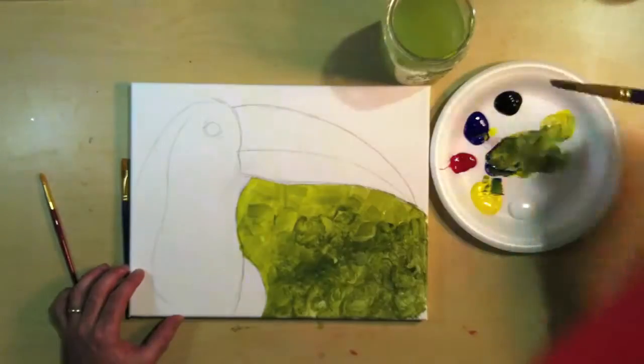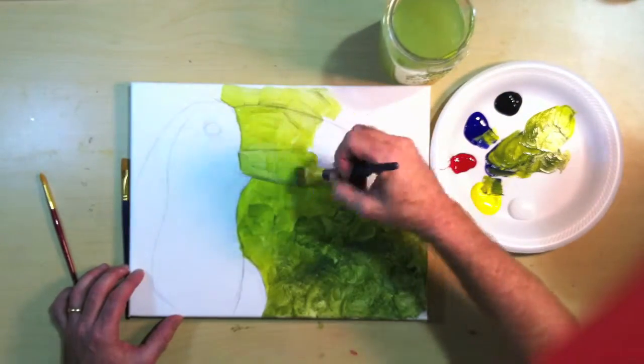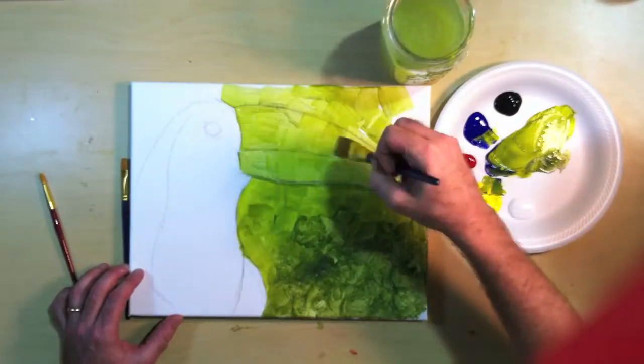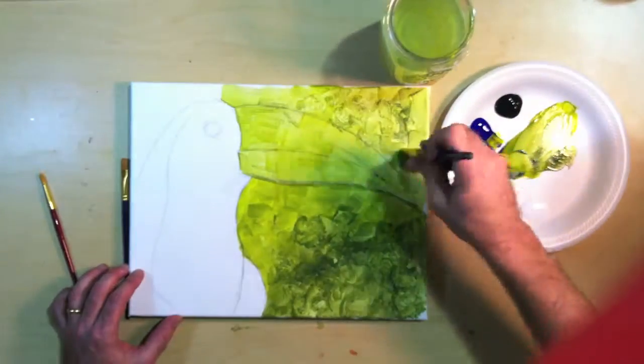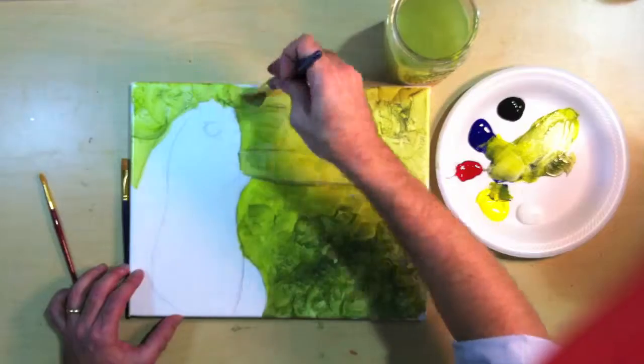You'll notice that with my brush the technique I'm using is I'm putting it down and I'm flattening it and swirling it around and twisting it a little bit. It creates these nice little bubbles for my background. It creates a nice little texture.